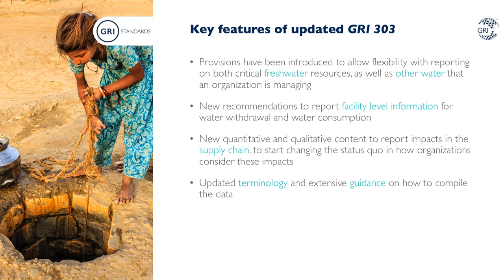GRI 303 Water and Effluence has introduced a requirement to report impacts in the value chain. A new reporting requirement asks organizations about how they interact with water and the impacts across the value chain. Reporting recommendations have also been added to report quantitative information about water use in the supply chain. This information is not always available, but the disclosure encourages companies to set up management systems to meet the requirements. There are new recommendations to report facility-level information for water withdrawal and water consumption, which will become increasingly relevant as measuring impacts at a local level grows in importance.